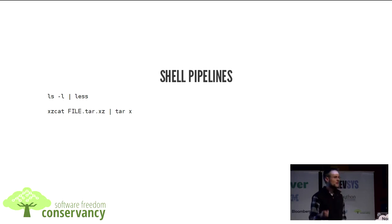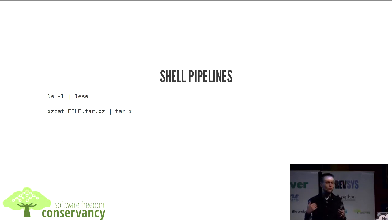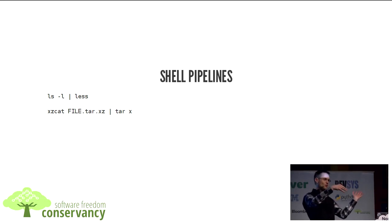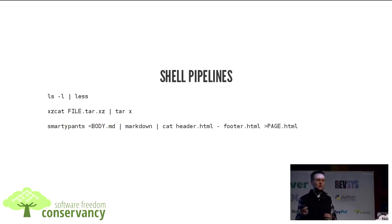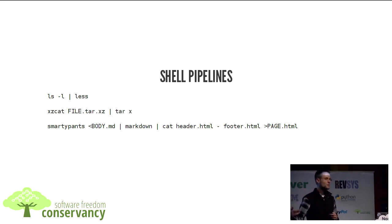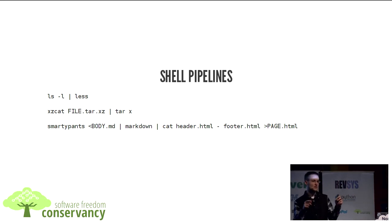Here's probably the first pipeline that everyone learns: take the ls command that lists files and pipe it into less, so that I can scroll through the list at my leisure rather than having it whoosh all the way down my terminal. Another common one taught to beginners: if you've got a tar archive, it's usually compressed. So you can run that file through the decompression tool — which might be zcat, bzcat, or xzcat — and then feed the output into tar extraction so you can see what's inside.